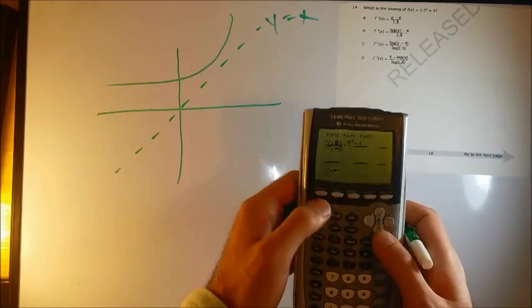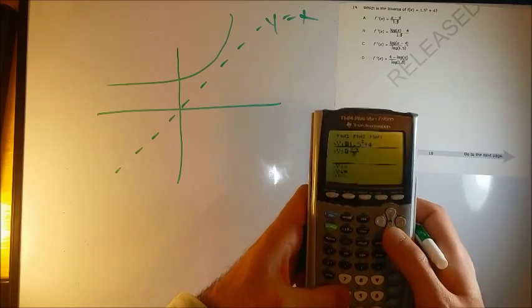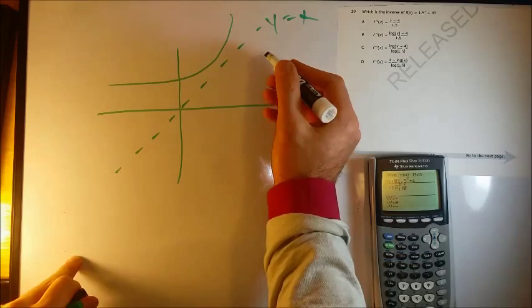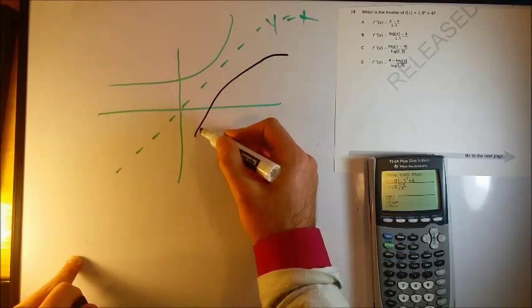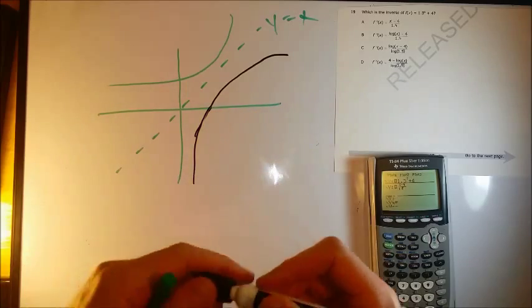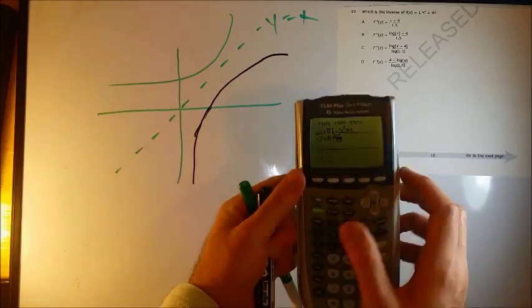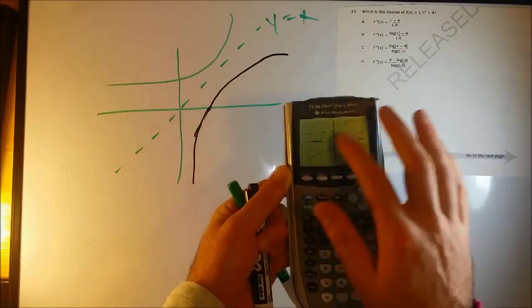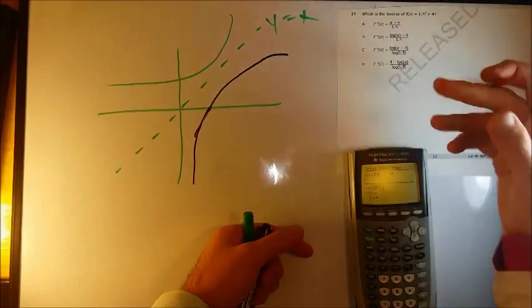So let's type this in A first. So alpha y equals x minus 4 over 1.5. And again, what I'm looking for is some graph that reflects across the y equals x line. We're looking for a graph that looks something like that. Let's see if this does. No, this one does not look like a reflection across that. So I will cross out A.